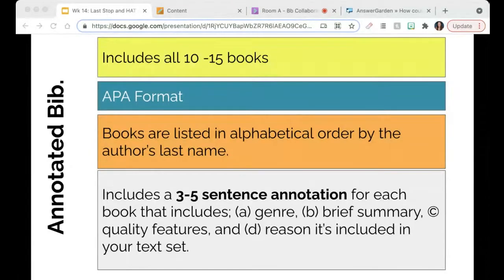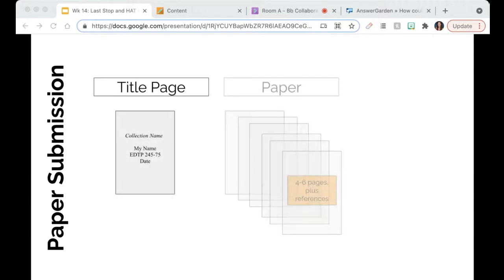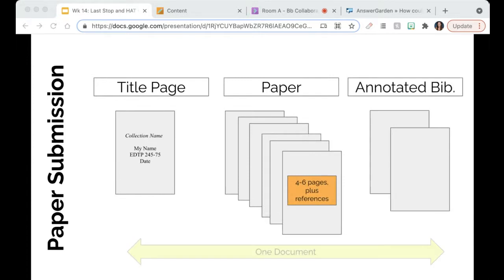Now let's talk a little bit about paper submission. Rachel, I see your question. I'm going to answer it right here. When you submit your paper and your annotated bibliography, I'm going to have you submit it like this. I'd like you to include a title page, your paper, your annotated bibliography, and you're going to attach it all as one document.